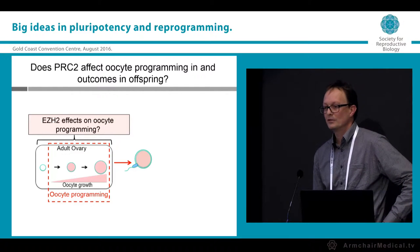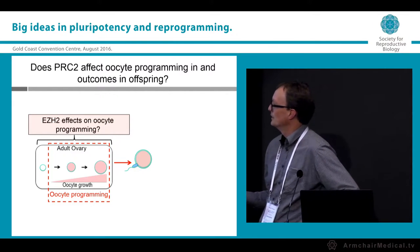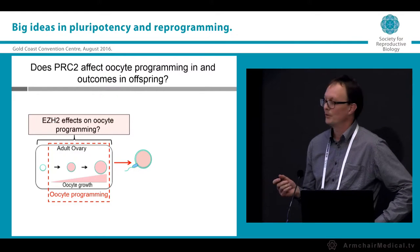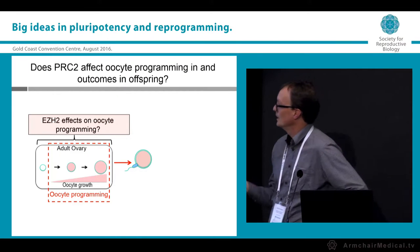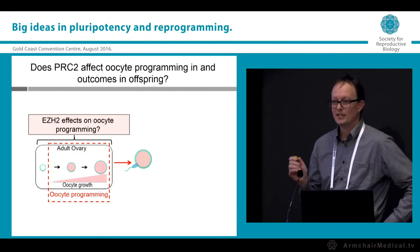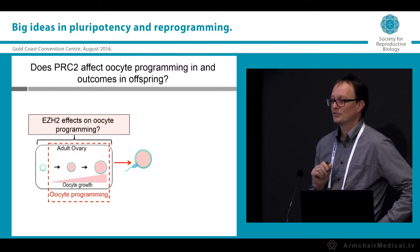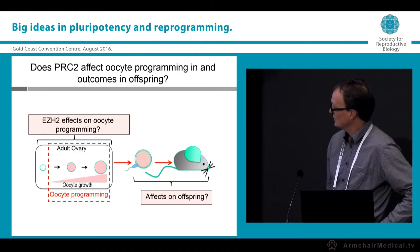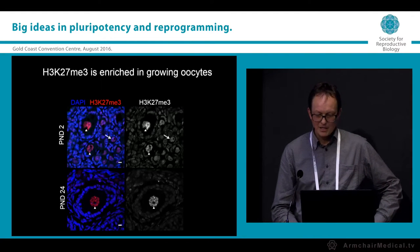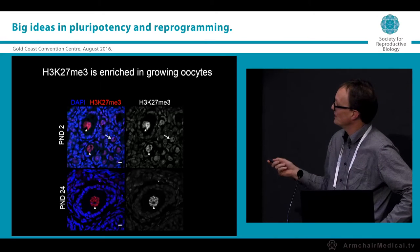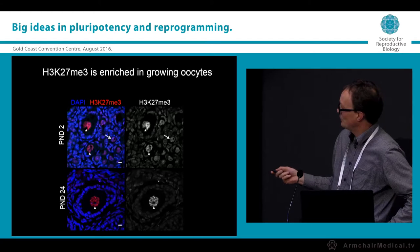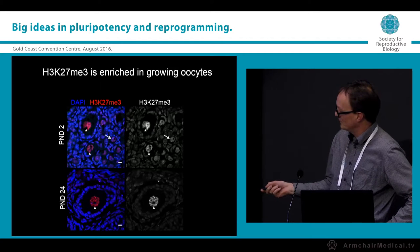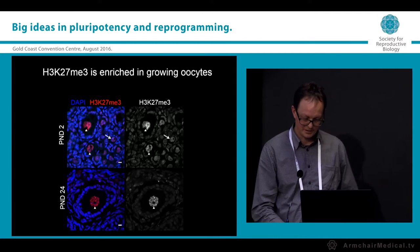We then asked whether similar effects occur on the maternal side, using a model in which we can delete EZH2 — or indeed EED — specifically in the growing oocyte, and ask whether this affects outcomes in the offspring. We first confirmed that trimethylated H3K27 is enriched in growing oocytes: you can see primordial oocytes progressing through day 2 and day 24, with clear enrichment in the growing oocyte.